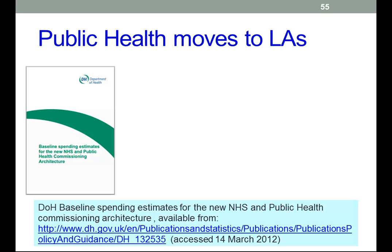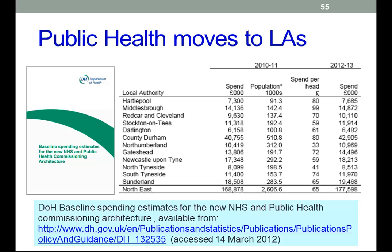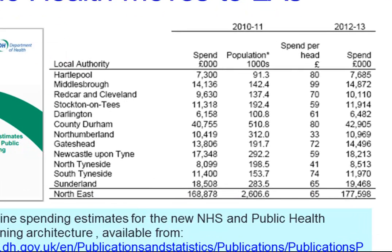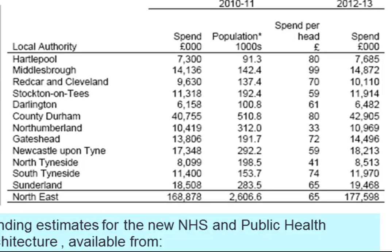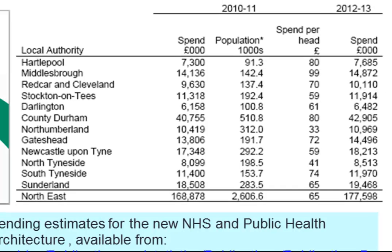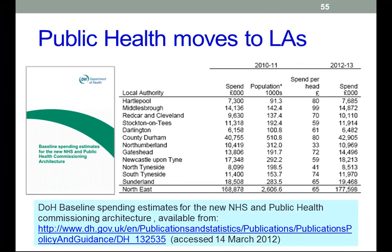The article suggests the average English local authority spends about £40 on public health per person. Some do better than others, some do worse. Most of our region actually does quite better than the national average on that calculation. For example, Middlesbrough is spending about £99 per head. Stockton-on-Tees is considerably less. Redcar — quite a lot less than Middlesbrough, partly because they're a bit smaller authorities.